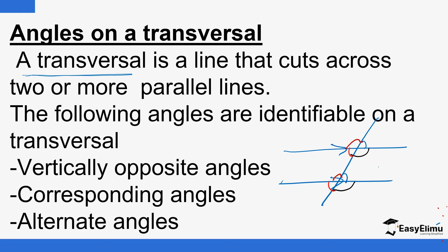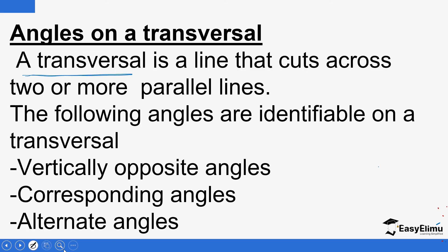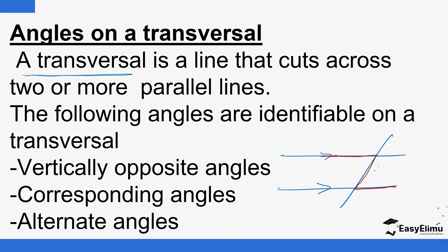We have vertically opposite, corresponding, and alternate angles. How do you get alternate angles? With the two parallel lines and the transversal, we draw something like a Z. Alternate angles, we also call them Z angles. This angle here and that angle there form something like a Z. We also have an inverted Z — that angle here and that angle there. Those are the ones we call alternate angles.